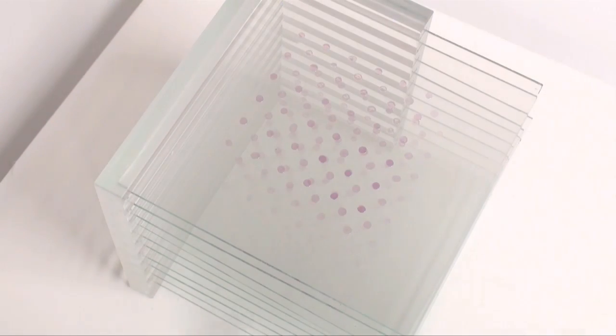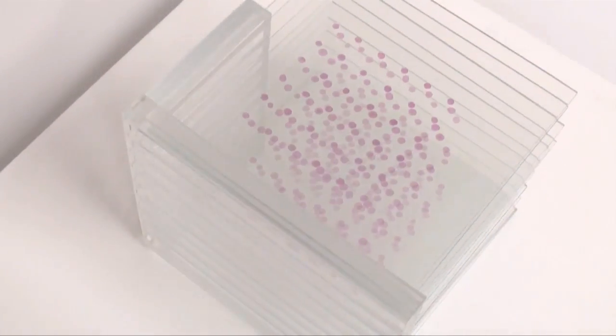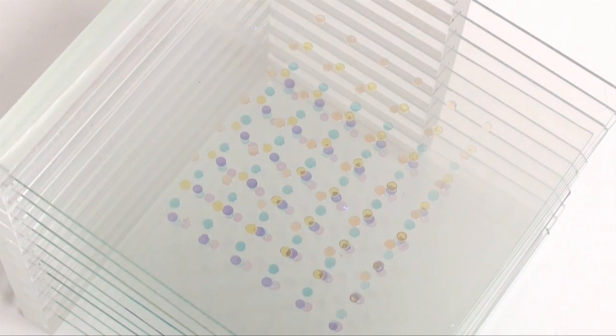Photochromic Sculpture can display volume data by producing colors even in bright places. The 3D pattern can be viewed from various angles. This system can produce multiple colors as well as a single color.